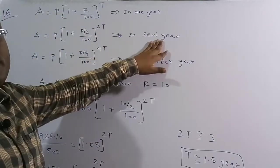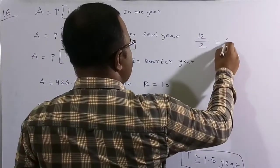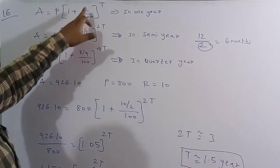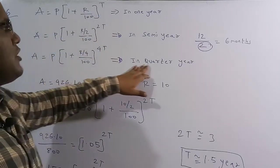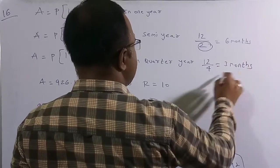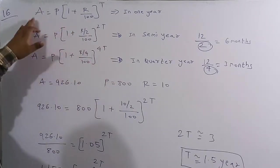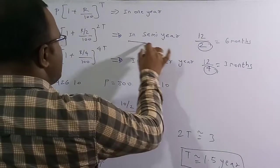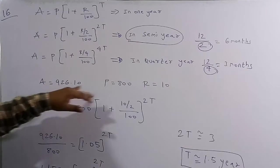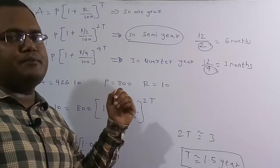For semi-annual compounding we replace r with r/2 and t with 2t in the standard formula. For quarterly, replace r with r/4 and t with 4t. Here A = 926.10, P = 800, r = 10%. Substituting: 926.10 = 800 × (1 + 10/2/100)^(2t) = 800 × (1.05)^(2t).